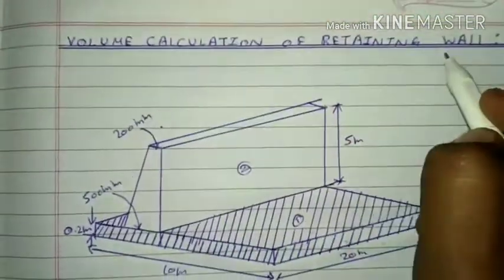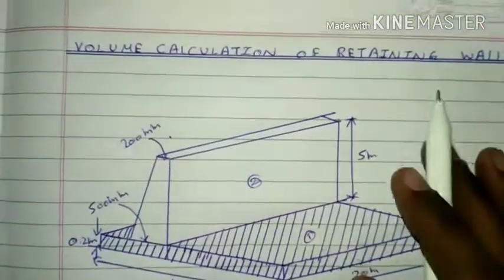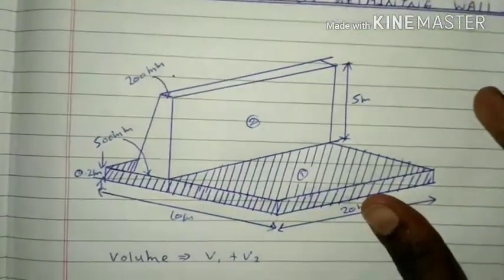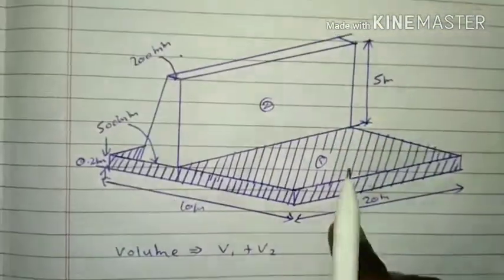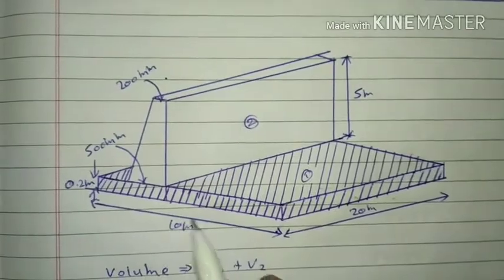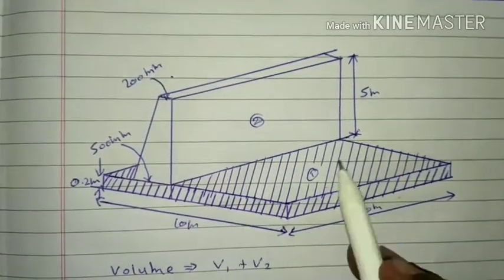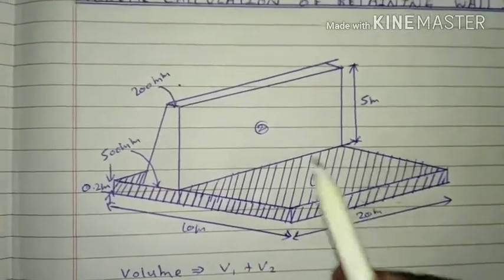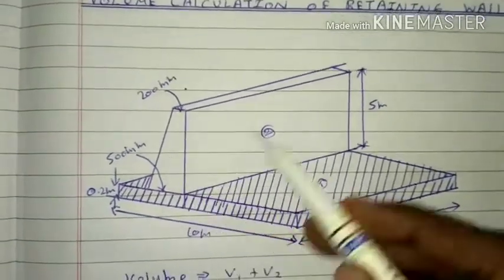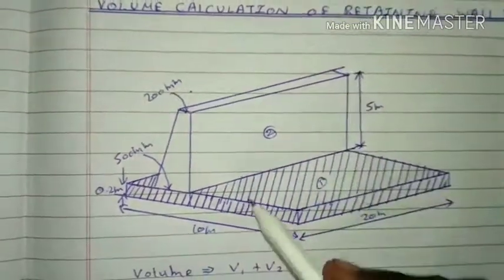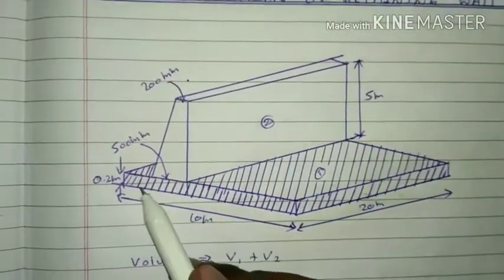Volume calculation of retaining wall. This is retaining values. You can see two segments: one is a slab and one is vertical. Volume is shown in the video — one volume for each member. What do you do?